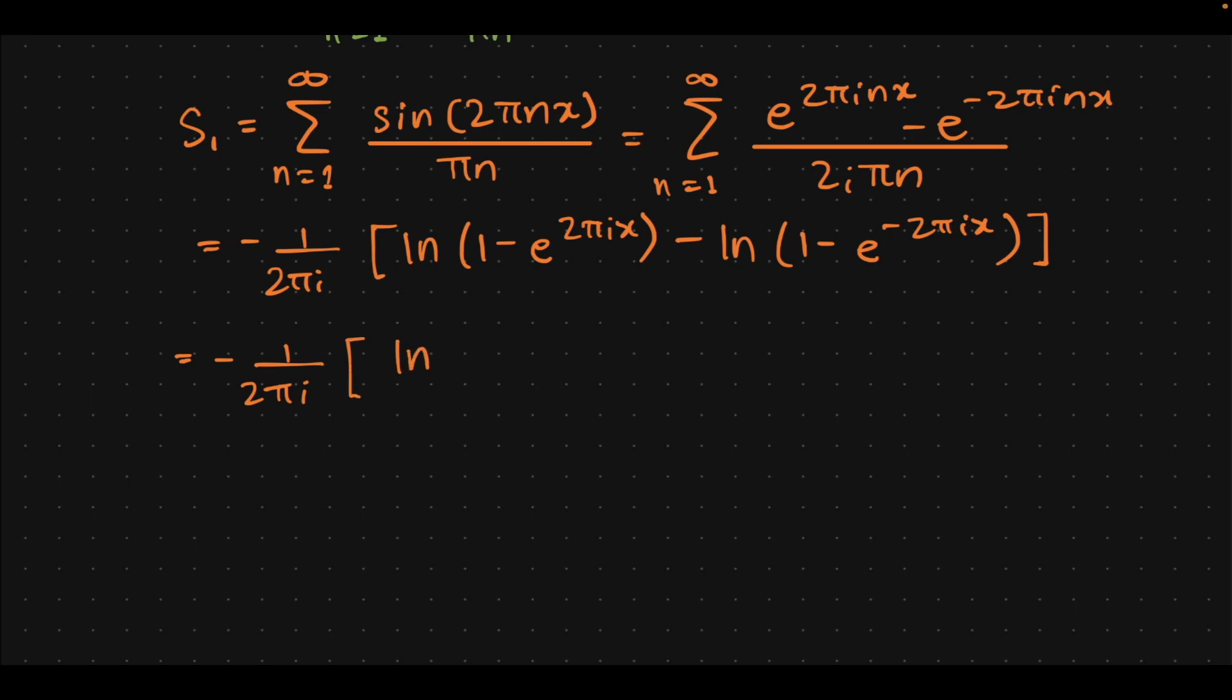Over e^(2πix) minus 1, plus natural log of e^(2πix). So I just did some algebra here. What I did was, if you use the log identity, you get this divided by that. We can write this, which just becomes...